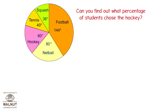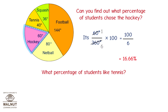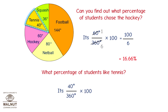Can you find out what percentage of students chose hockey? In the pie chart, the angle shown is 60 degrees out of 360 degrees. We write it as 60 upon 360 into 100. Simplify this and we get 16.66%. What percentage of students like tennis? The angle shown is 40 degrees out of 360 degrees. We write it as 40 upon 360 into 100. Simplify this and we get 11.11%.